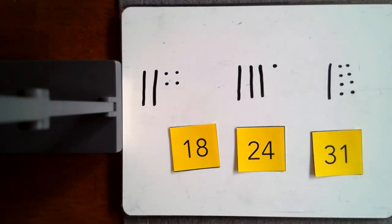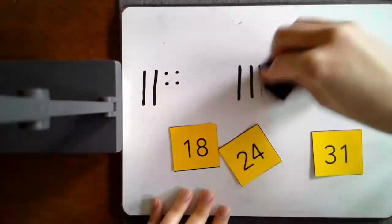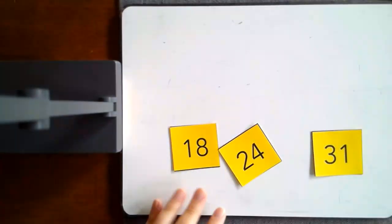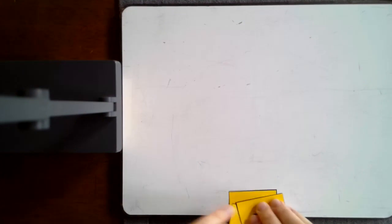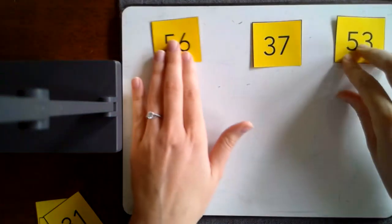Let's do one more example, first graders. Our three numbers are 56, 37, 53.